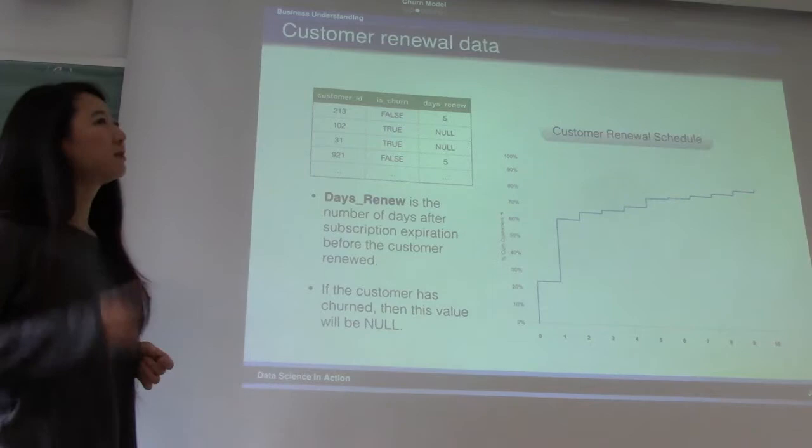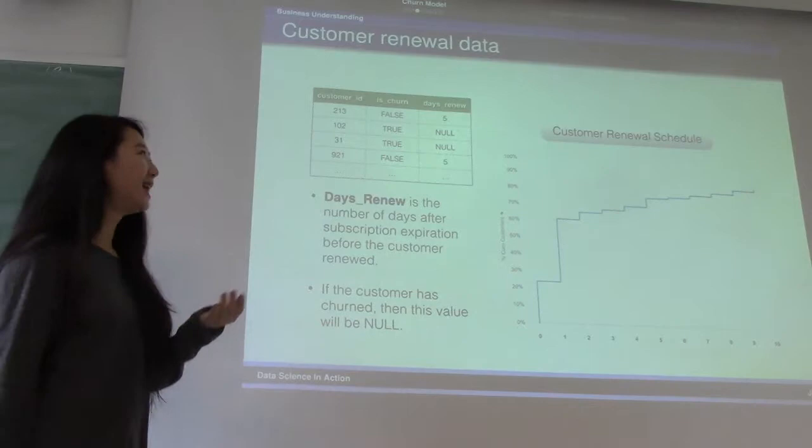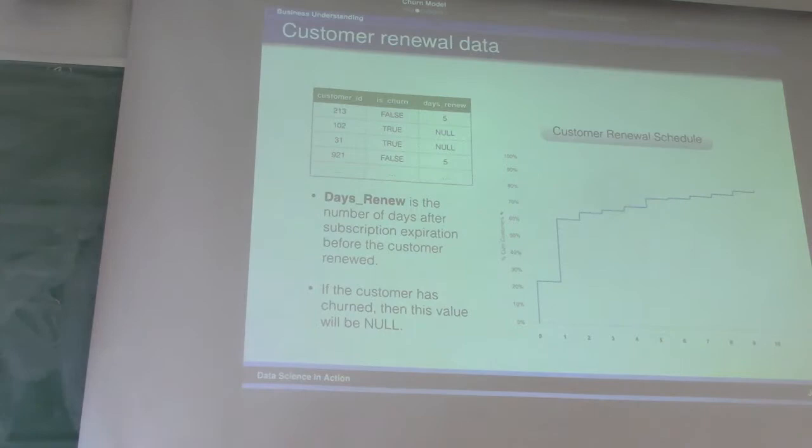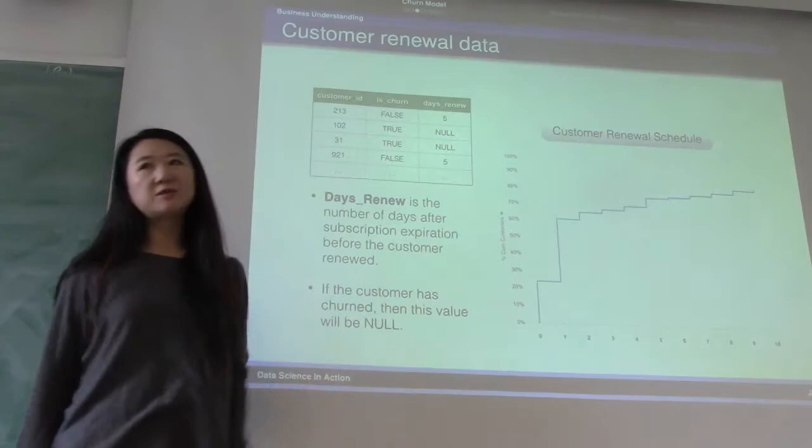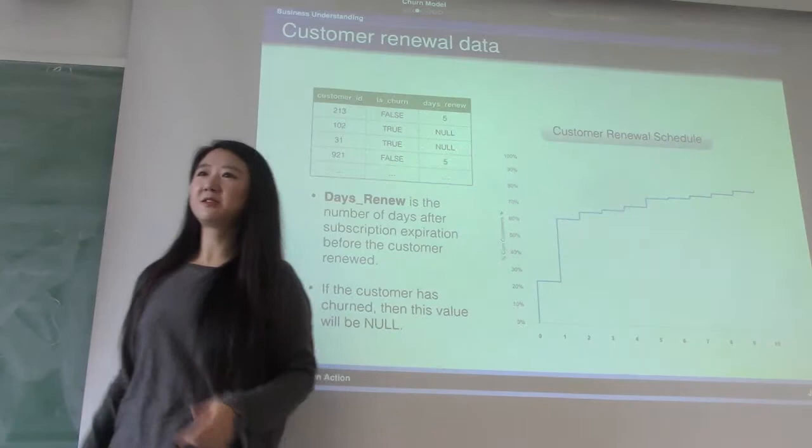First, data understanding. The first piece of data we work on is customer renewal data. There are three columns: customer ID, is_churned true or false, and days renewed. Notice that days renewed equals the number of days the customer has renewed after the subscription expired. When the customer has churned, naturally days renewed will be null. In reality, this is considered somewhat missing data, but it's perfectly valid missing data. No value makes sense here because you shouldn't have any value for that.